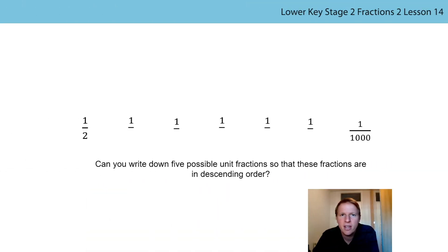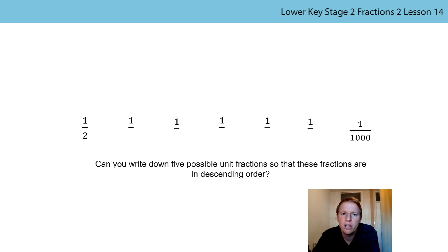Hi everyone, Mr East here again. I'm going to take you through today's lesson and we're going to begin by going through the practice activity from the previous lesson. You were asked to look at these two fractions on the screen: one half and one thousandth, and you were asked to write down five fractions in between these fractions so that they are in order.